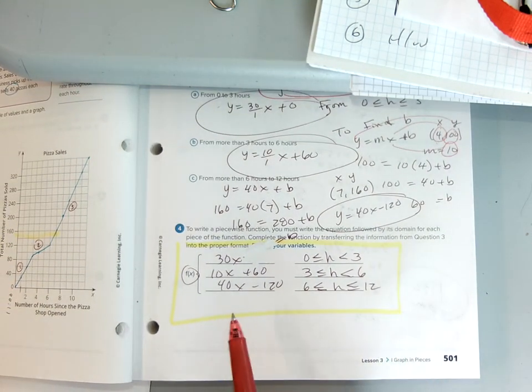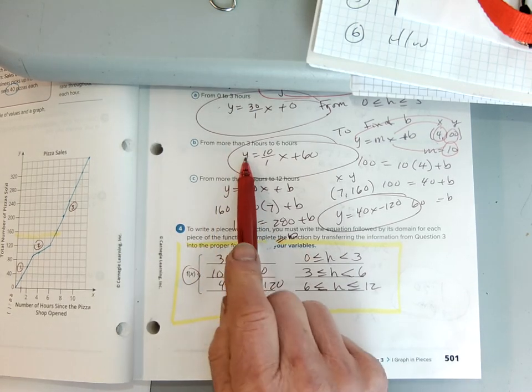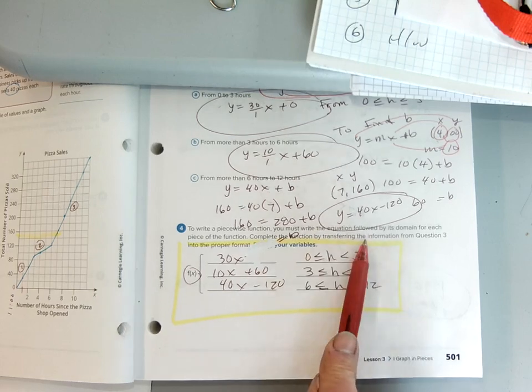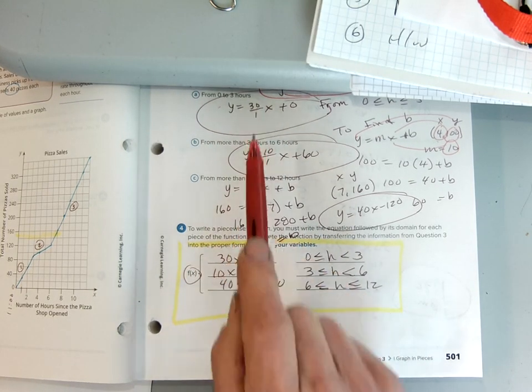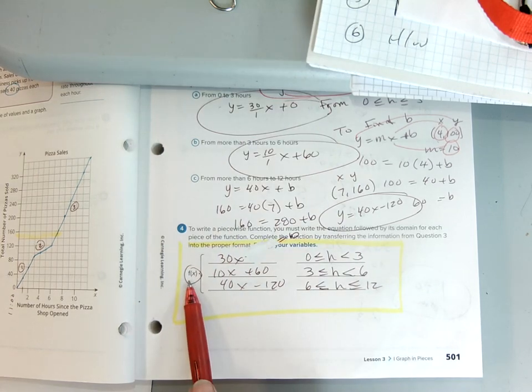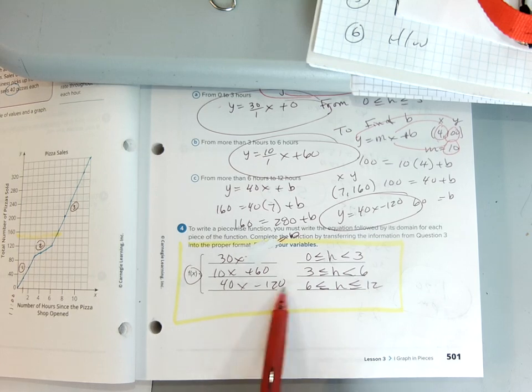So finally, we put it all together as a piecewise graph. f(x) and y are the same thing. I don't need to write y because f(x) and y are the same thing. So this is f(x) equals 30x. That's my first equation. y equals 10x plus 60, or y equals 40x minus 120. f(x), not y.